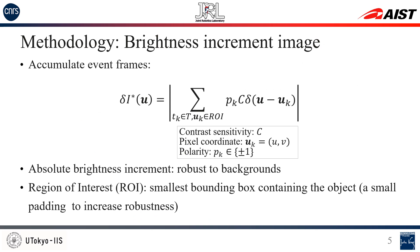In event frame generation, we use absolute brightness increment to make the method robust to different backgrounds. We also load new events in the region of interest, which is the smallest bounding box containing the object. A small padding is also added to increase robustness.